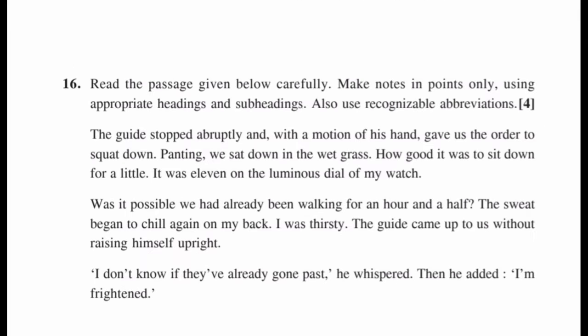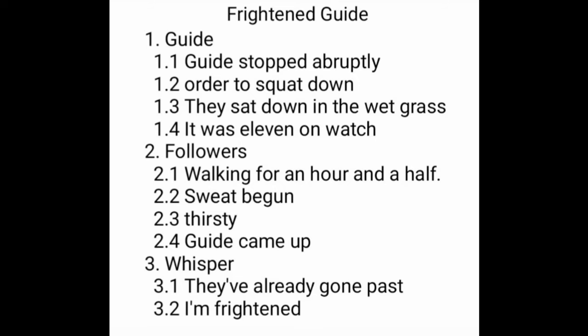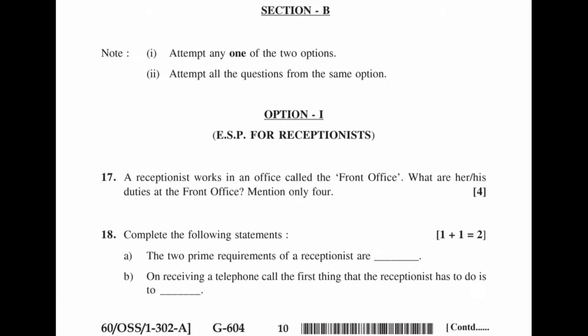Question 16: Read the passage given below carefully. Make notes in points only using appropriate headings, subheadings, and recognizable abbreviations. Answer — Frightened Guide: 1. Guide: 1.1 Guide stopped abruptly. 1.2 Ordered to sit down. 1.3 They sat down in the wet grass. 1.4 It was 11 on the watch. 2. Followers: 2.1 Walking for an hour and a half. 2.2 Sweat began. 3. Whisper: 3.1 They have already gone past. 3.2 I am frightened.